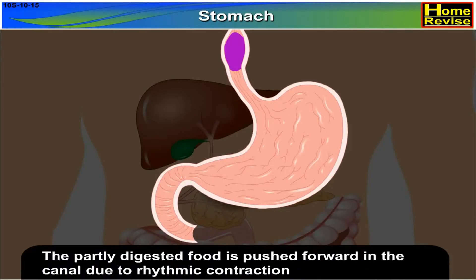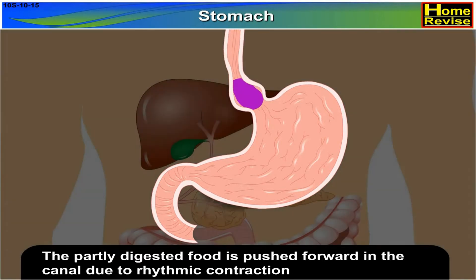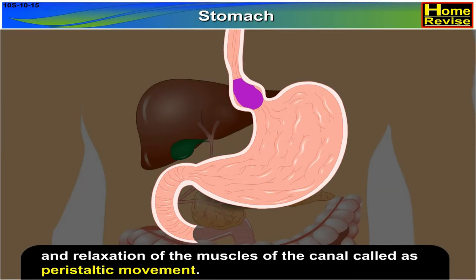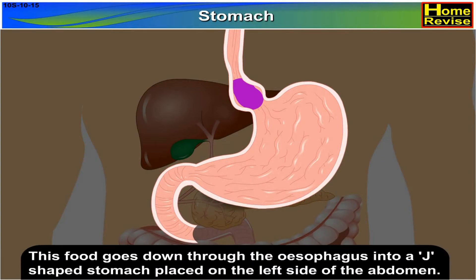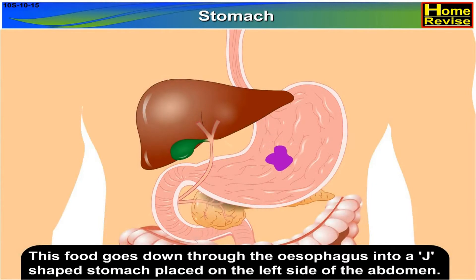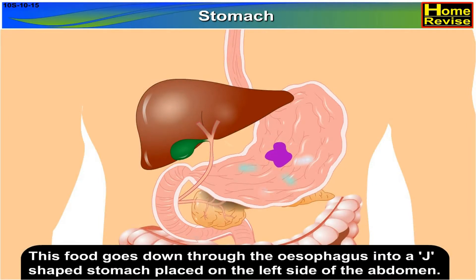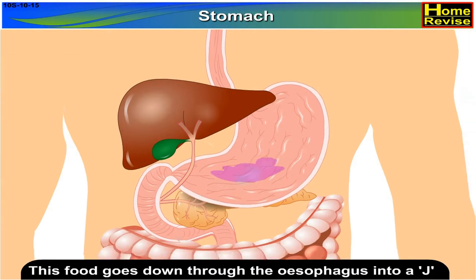The partly digested food is pushed forward in the canal due to rhythmic contraction and relaxation of the muscles of the canal, called peristaltic movement. This food goes down through the esophagus into a J-shaped stomach placed on the left side of the abdomen.